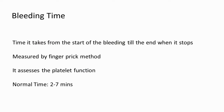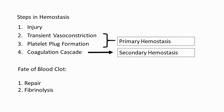Bleeding time is measured from the start of bleeding until it stops, assessed by the finger prick method. It generally assesses platelet function — think of it as the time it takes to form the platelet plug, because that's when bleeding stops. The rest of the steps only stabilize the clot. Normal bleeding time is between 2 to 7 minutes. These lab tests will become more important when discussing blood disorders.